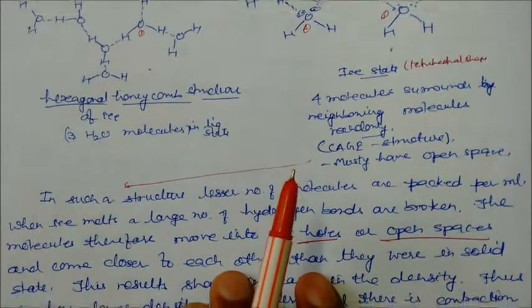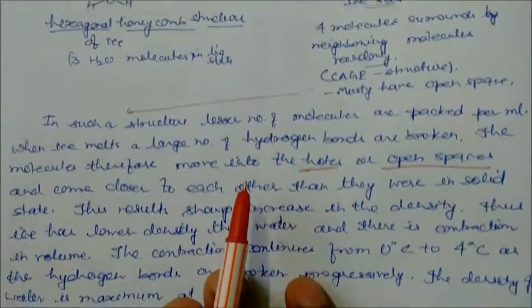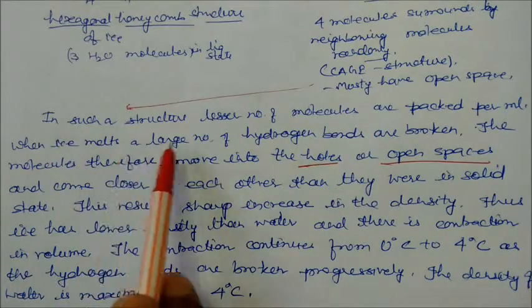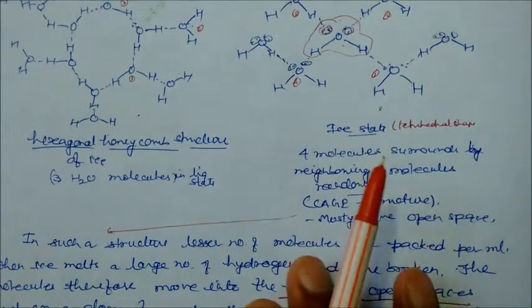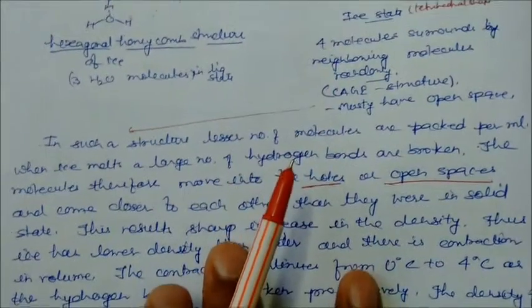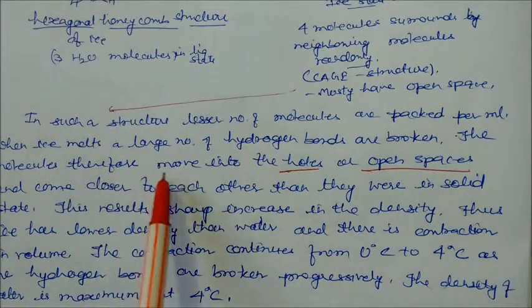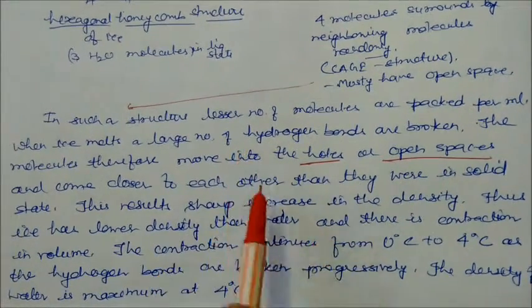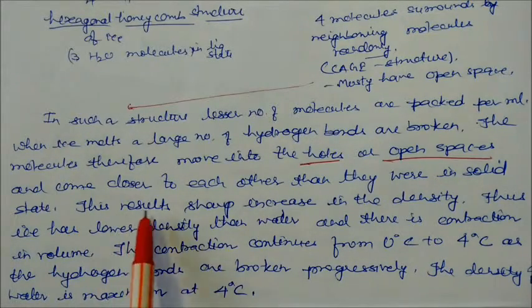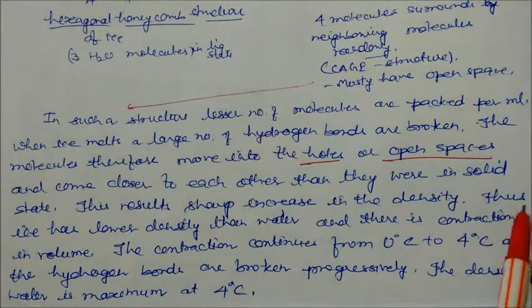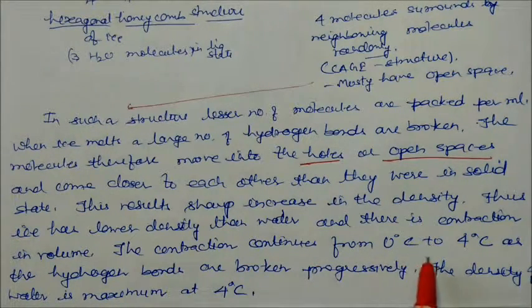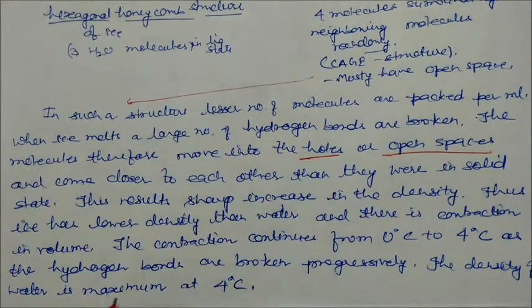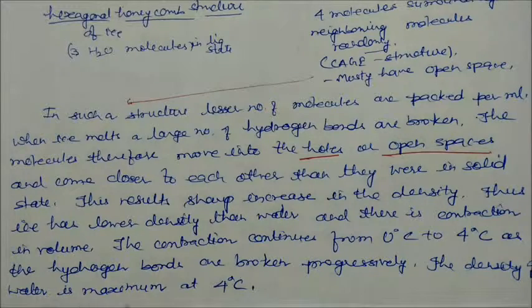When ice melts, a large number of hydrogen bonds are broken. These are the hydrogen bonds you can see here. On increasing temperature these hydrogen bonds are broken, so molecules move into the holes or open spaces and come closer to each other than they were in solid state. This results in sharp increase in density. Thus ice has lower density than water. There is a contraction in volume and this contraction continues from 0°C to 4°C as hydrogen bonds are broken progressively. The density of water is maximum at 4°C.